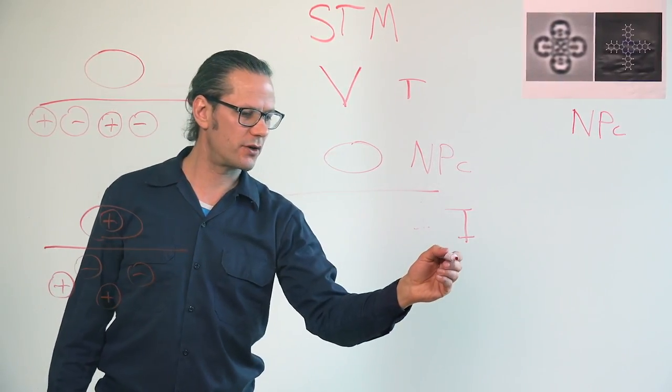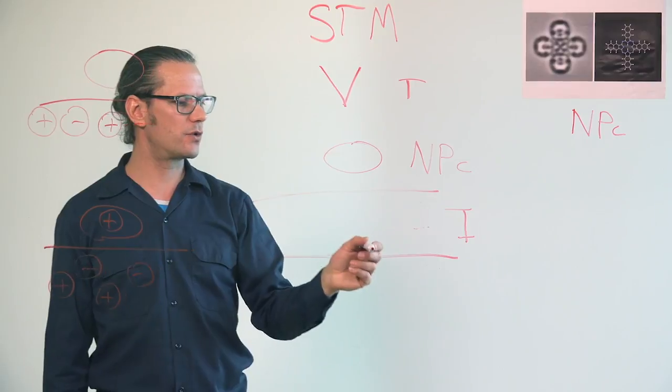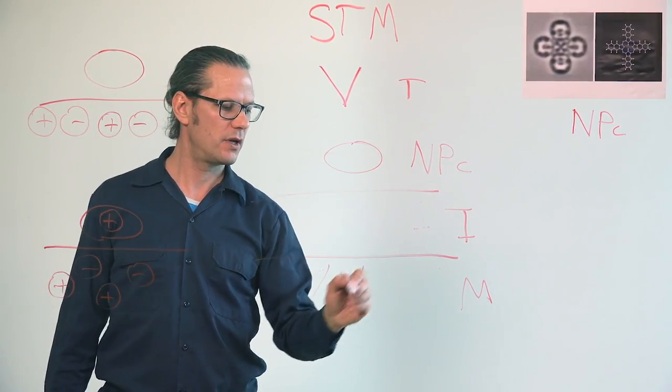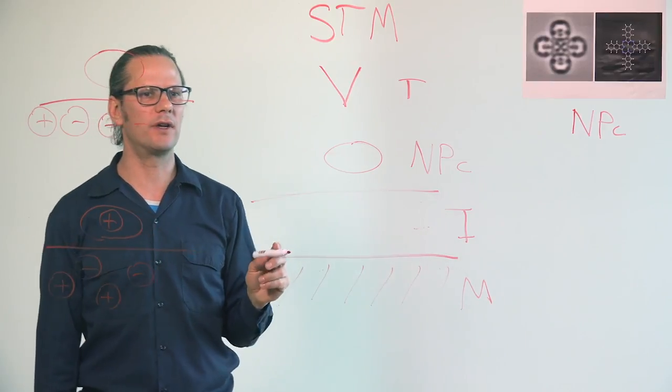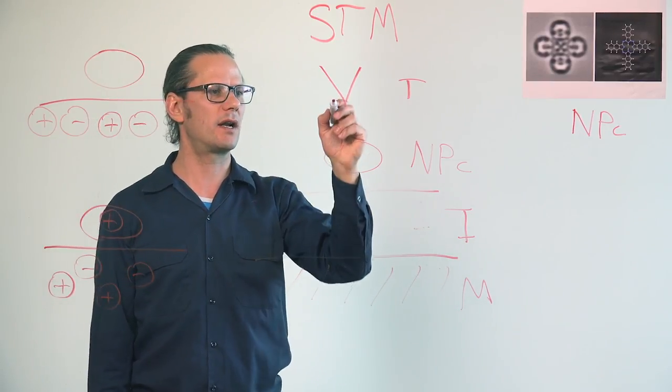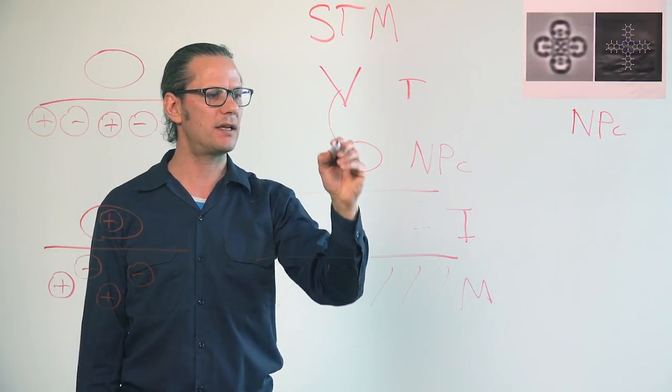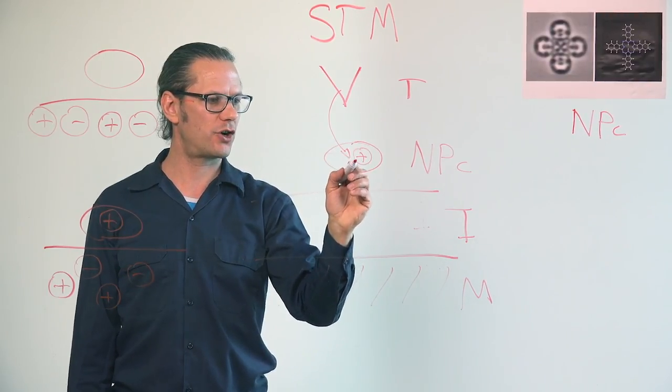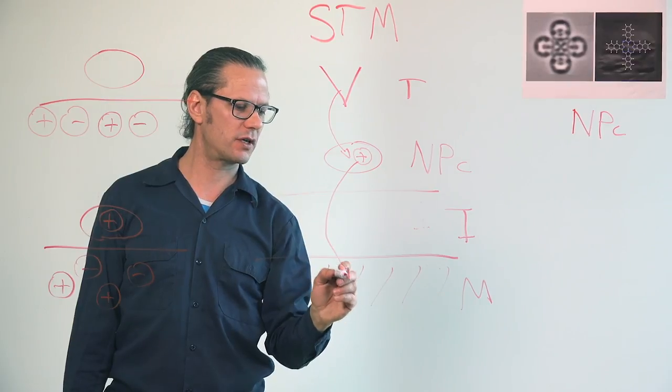In STM, you need a conductive substrate. You can do that by having a metal film below, and now you can measure a tunneling current, which is what you do in scanning tunneling microscopy. You add a charge to your molecule, and then that charge goes to the conductive substrate.